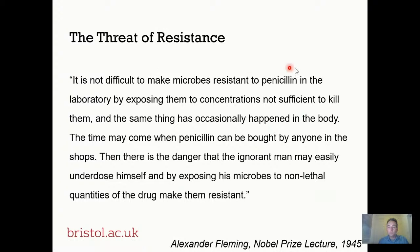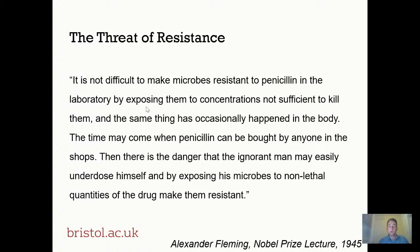Fleming said: it's not difficult to make microbes resistant to penicillin in the laboratory by exposing them to concentrations not sufficient to kill them, and the same thing has occasionally happened in the body. He went on to say that the time may come when penicillin can be bought by anyone in the shops, and there is the danger that the ignorant individual could underdose themselves, expose their microbial flora to a sublethal dose, and in that way illicit resistance. He was aware that resistance had already been identified in the laboratory — an enzyme that degraded penicillin had already been identified by Abraham and Chain, working in Oxford, before any human being had ever been dosed with the drug.